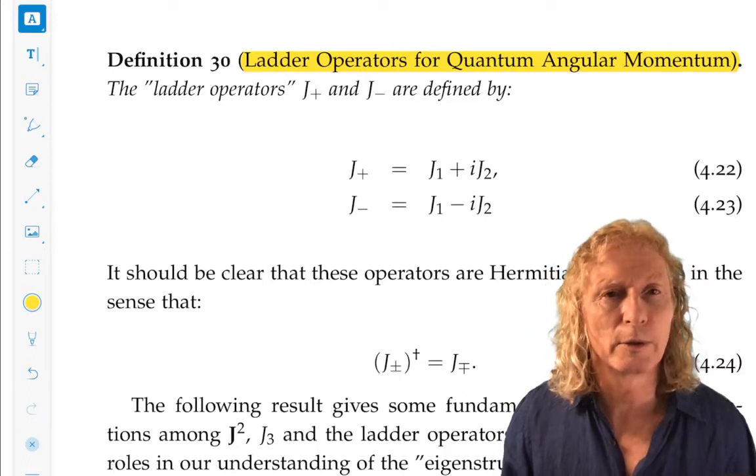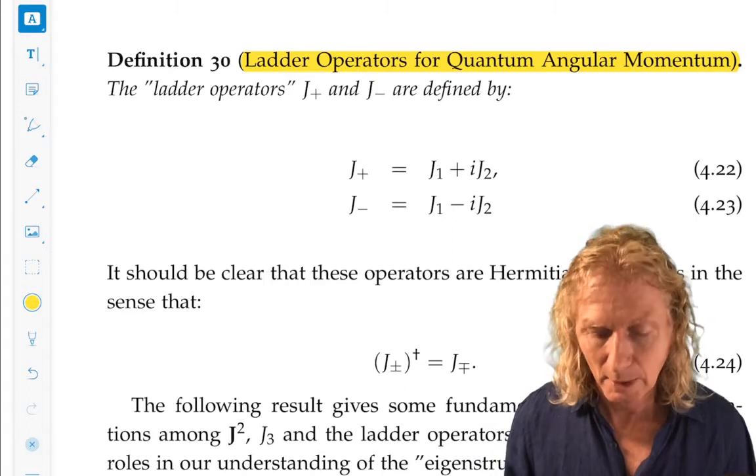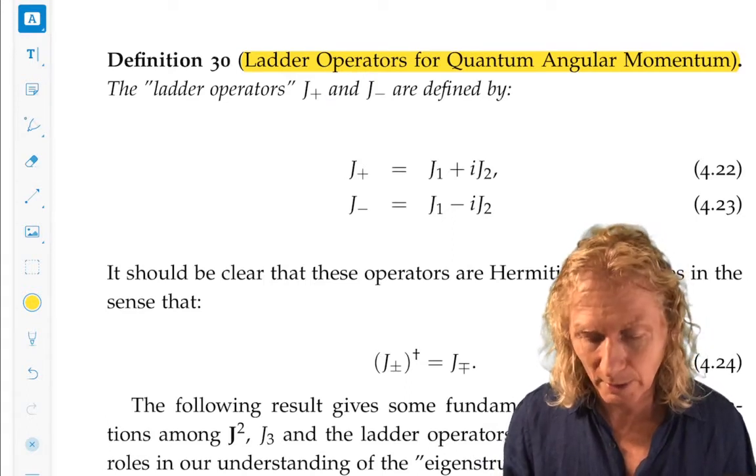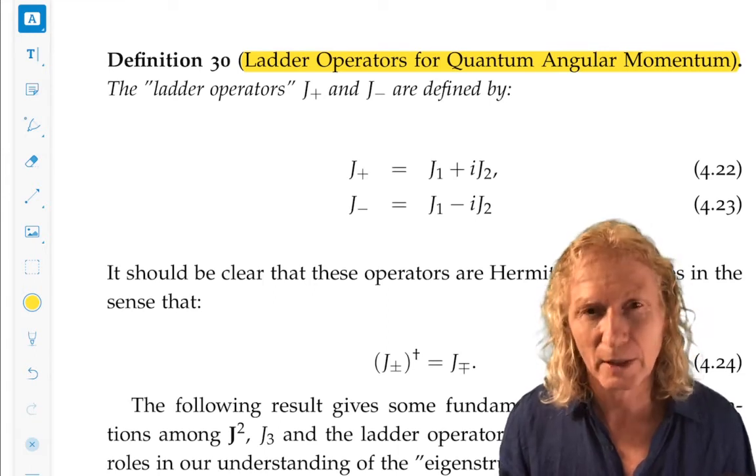There are two ladder operators: j-plus goes up, j-minus goes down. j-plus is j1 plus i j2 and j-minus is j1 minus i j2.